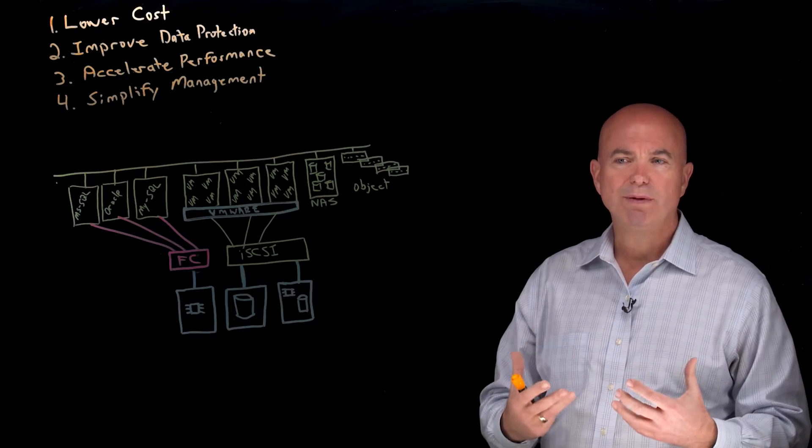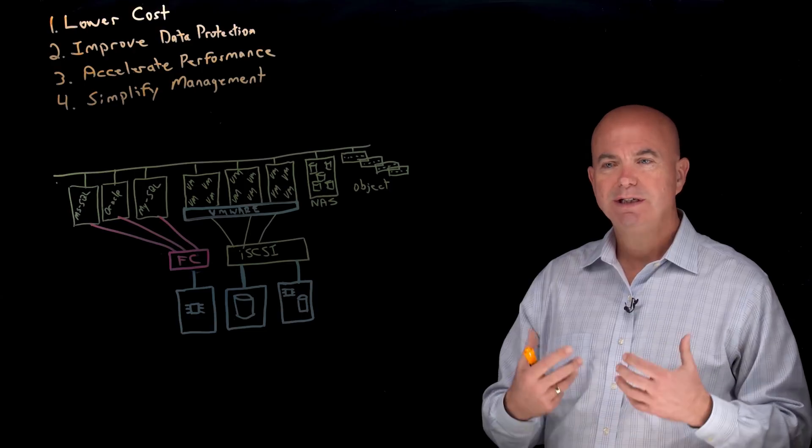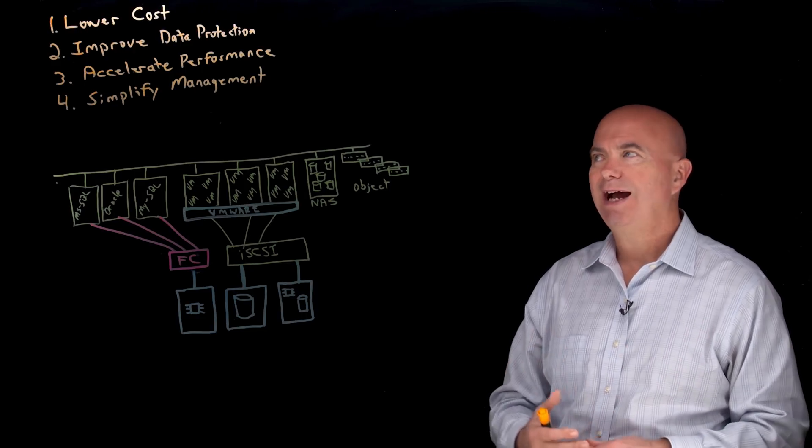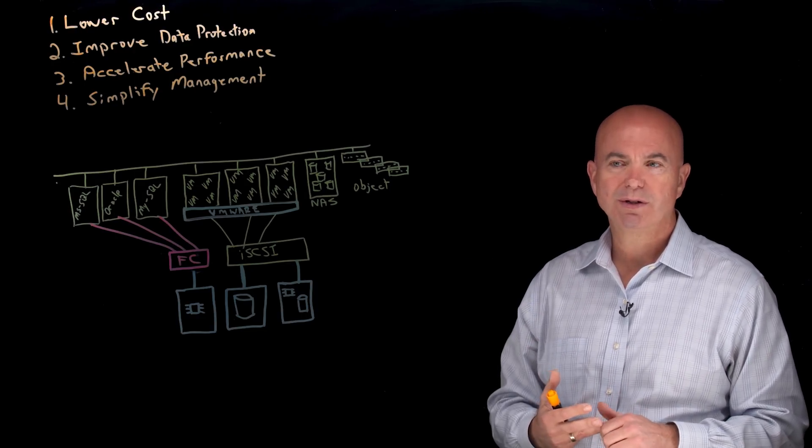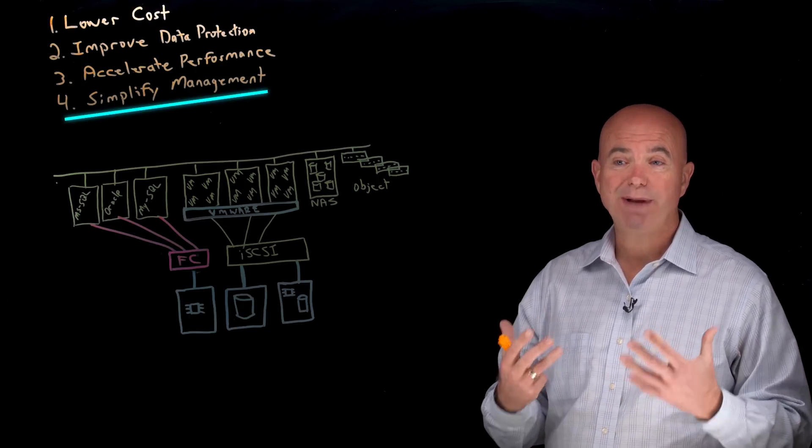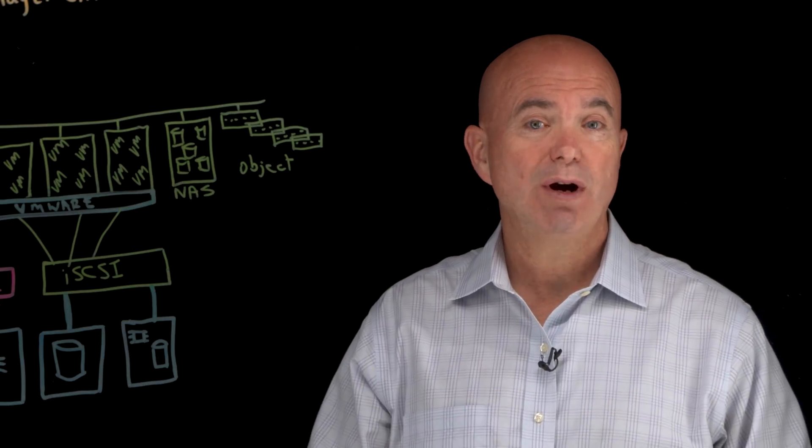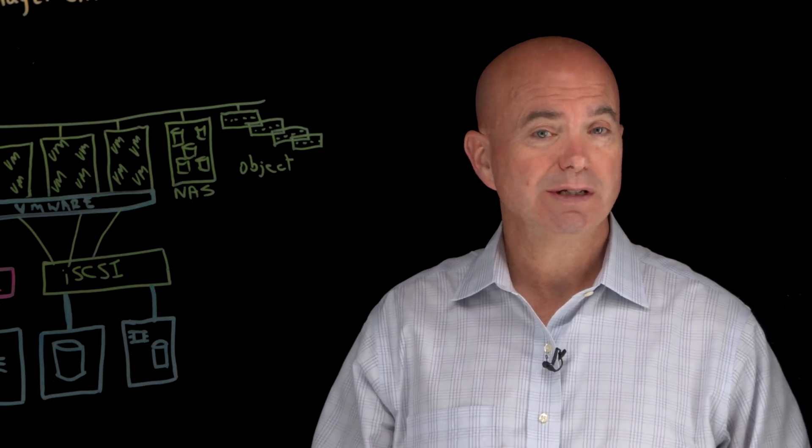Third is accelerate performance. We're always under pressure to deliver information faster and faster, to scale bigger, so accelerating performance is also a top priority. And then finally, at some point we have to simplify management to make the environment easier to manage, so it can continue to grow and keep pace with the needs of the organization.